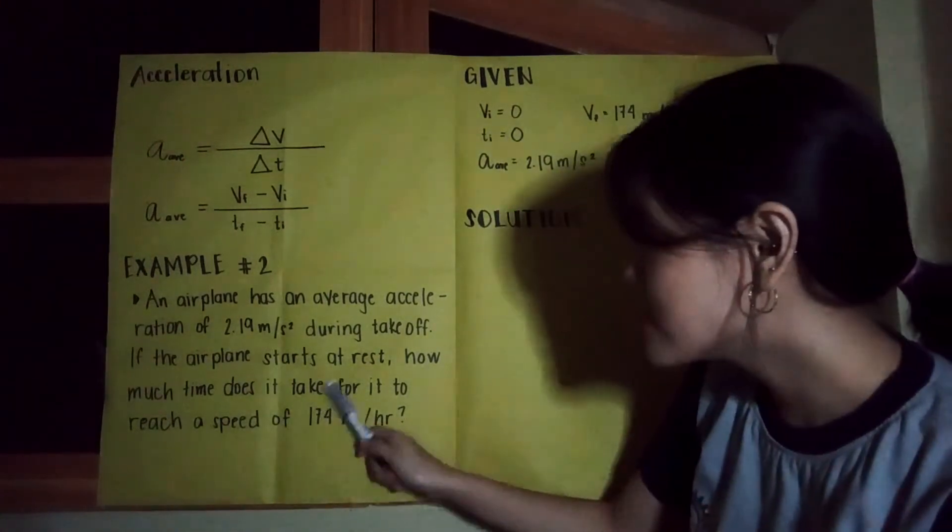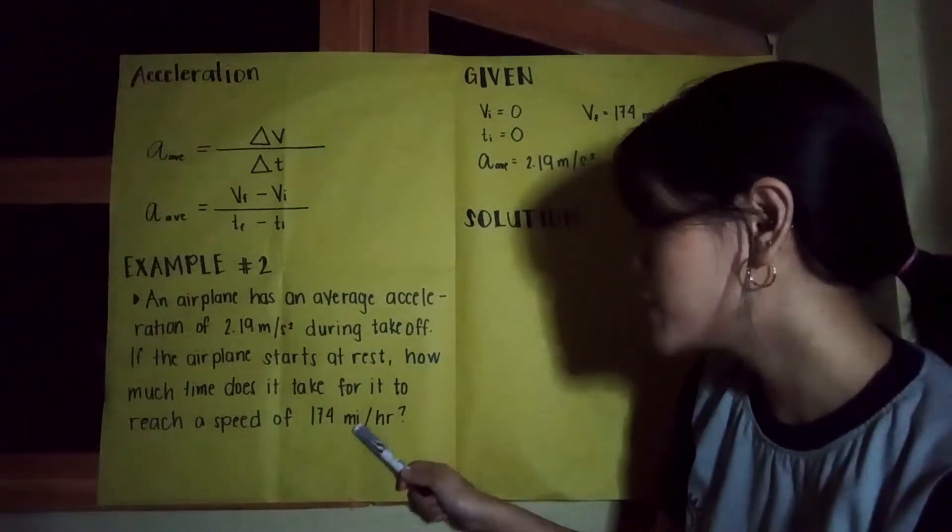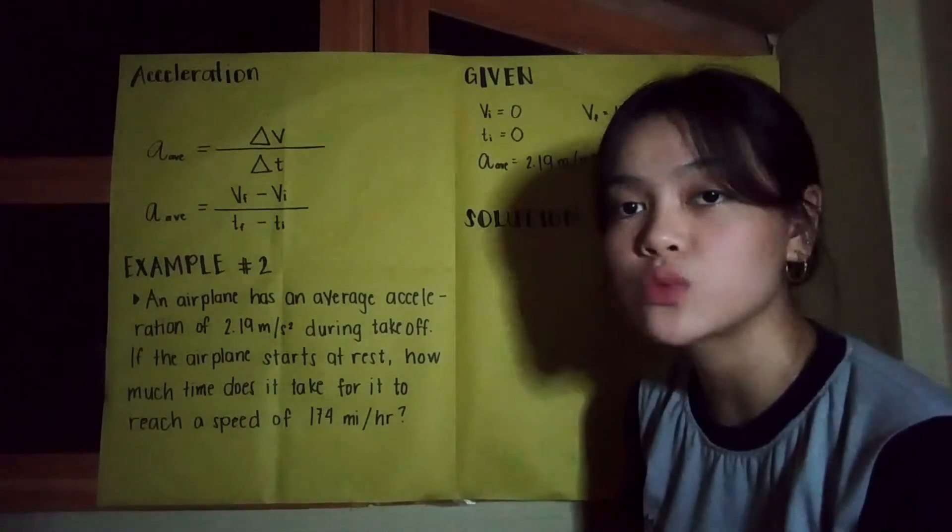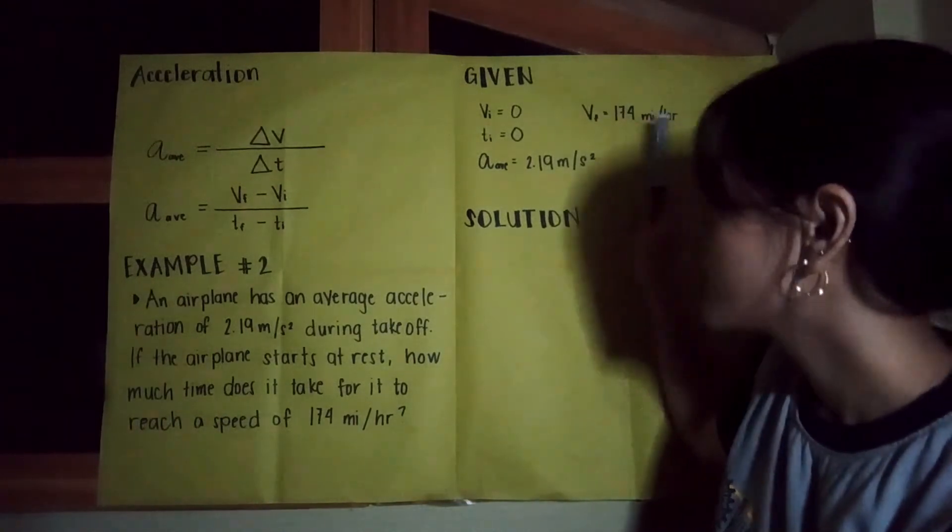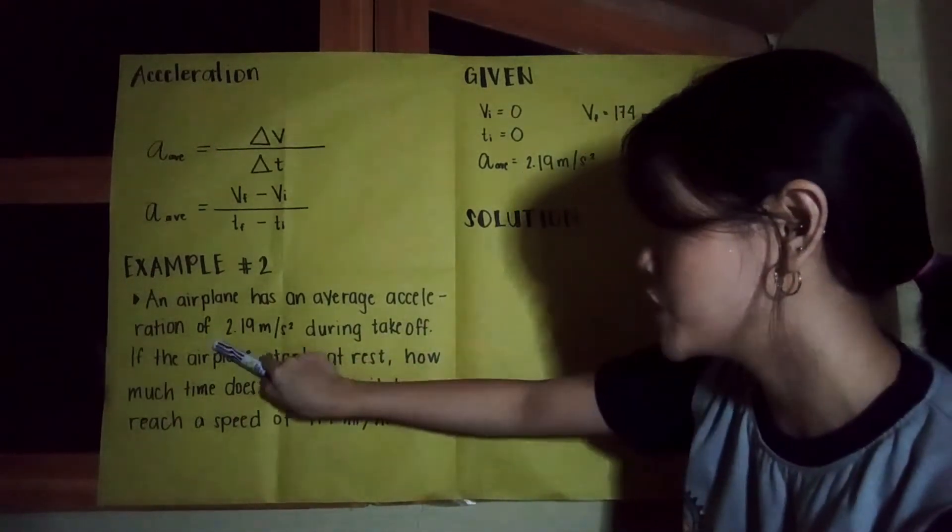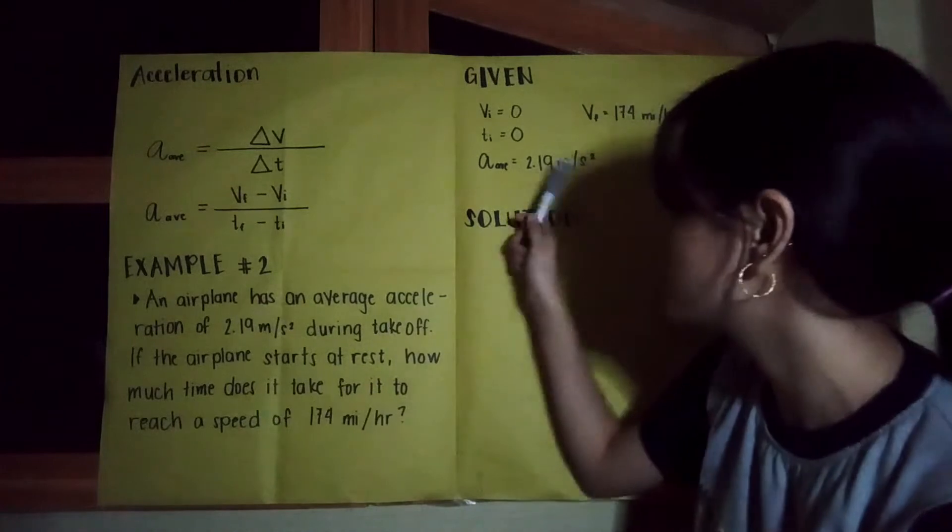It says that 174 miles per hour is the final speed we need to reach, so we have 174 miles per hour. And our average acceleration is equivalent to 2.19 meters per second squared.